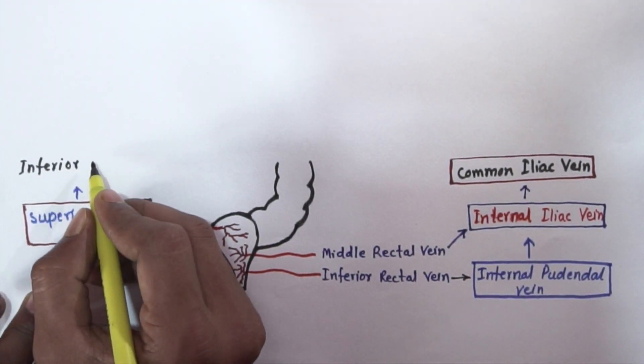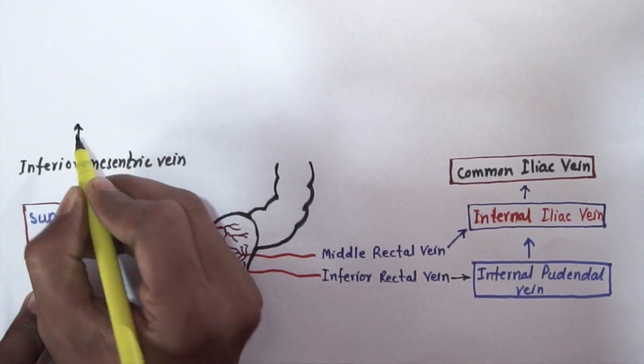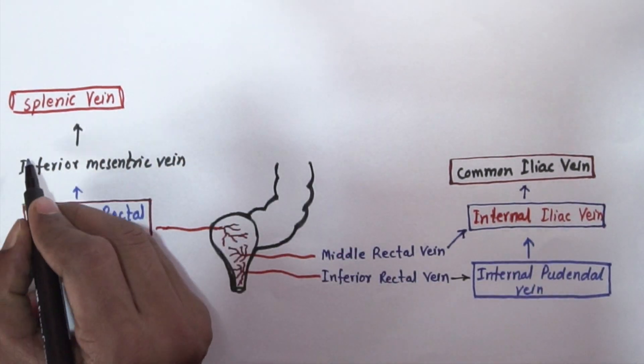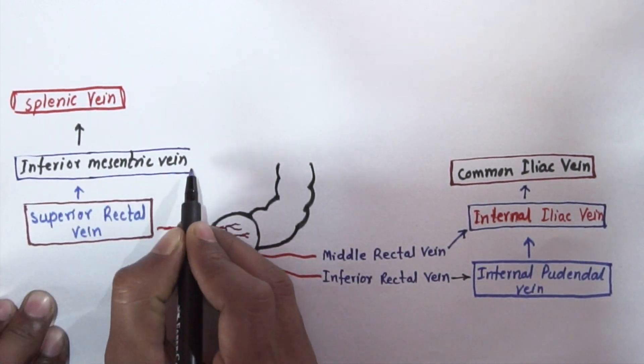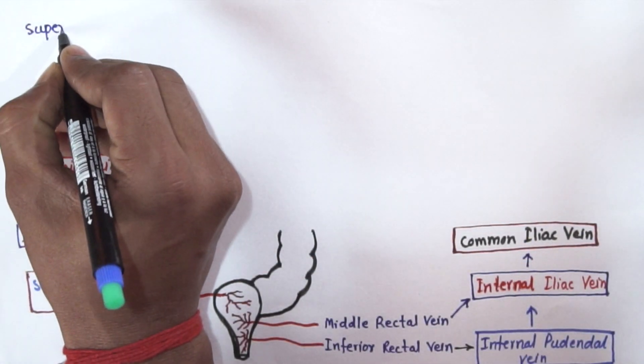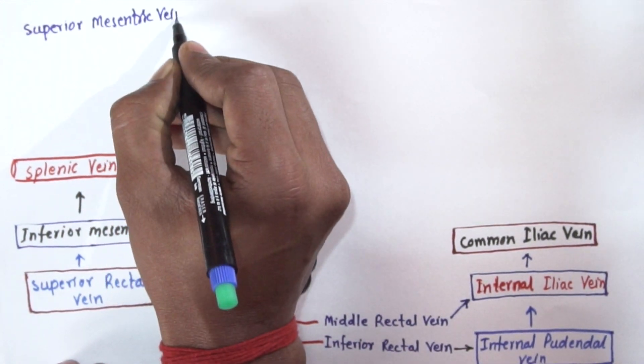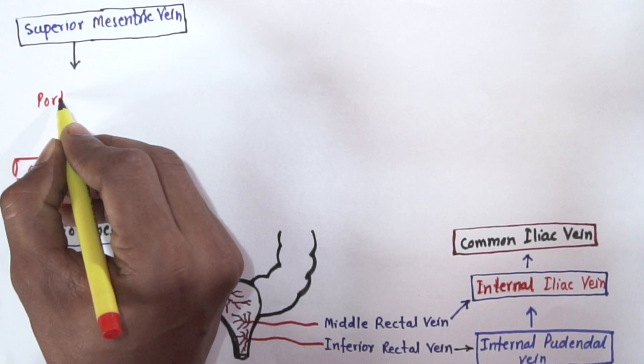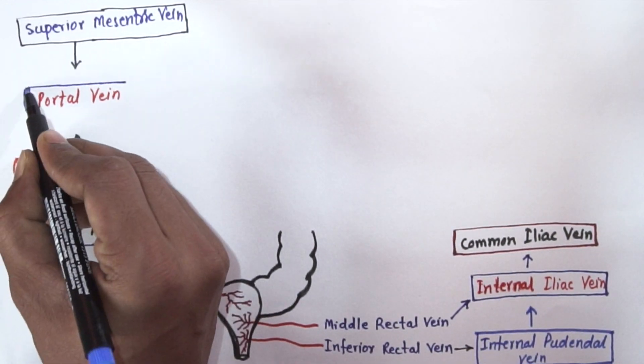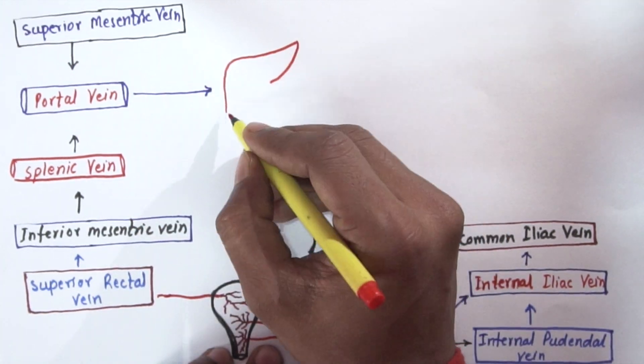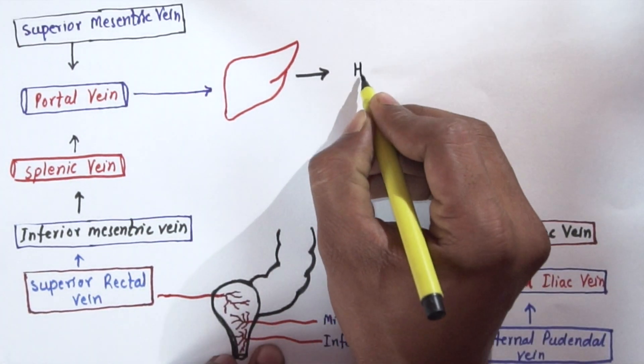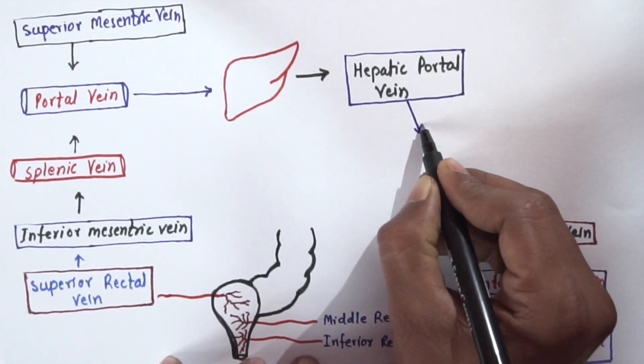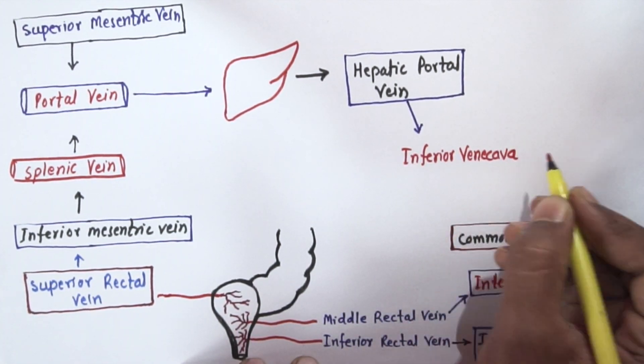Middle rectal vein also merges into internal iliac vein, which in turn drains into common iliac vein. Now come to this superior rectal vein, which receives blood from upper part of rectum. Now it will drain into inferior mesenteric vein, which in turn drains into splenic vein. Now this splenic vein will combine with superior mesenteric vein and they will make a common vein called portal vein.